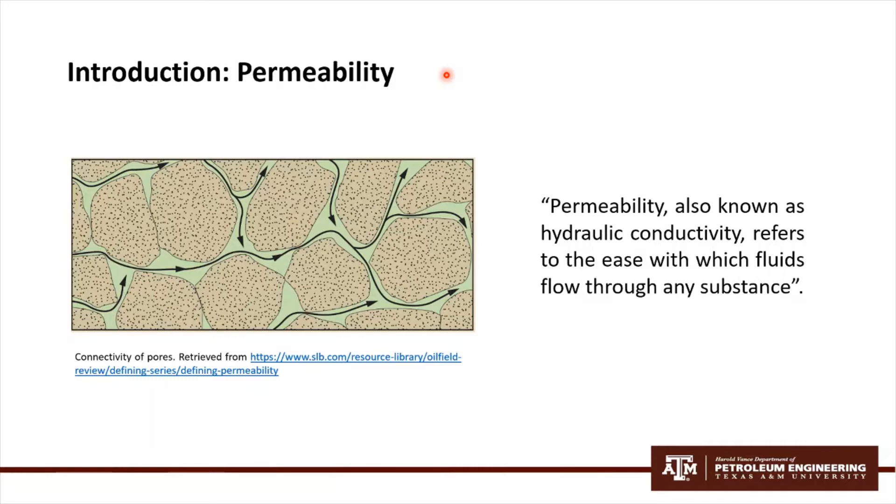Absolute is the measurement of permeability conducted when a single fluid or phase is present in the rock. On the other hand, effective is the ability to preferentially flow or transmit a particular fluid through a rock when other immiscible fluids are present in the reservoir. Mapping permeability, in general, can be considered one of the most important aspects of performance estimation studies.